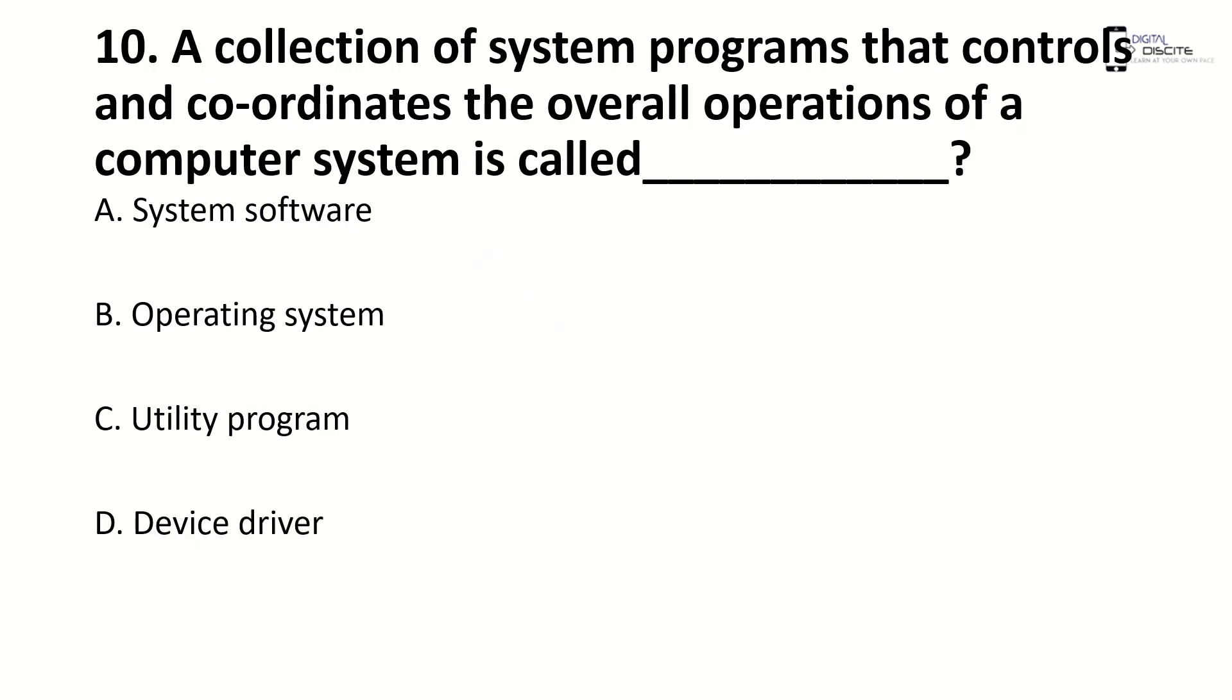A collection of system programs that controls and coordinates the overall operations of a computer system is called... Right answer is B. Operating system.